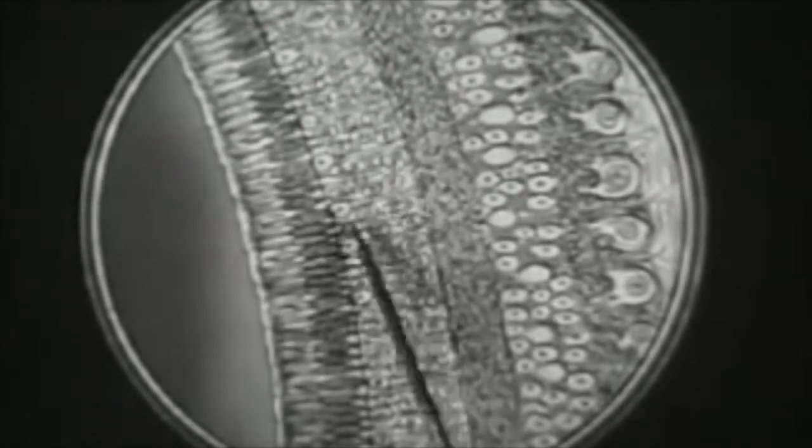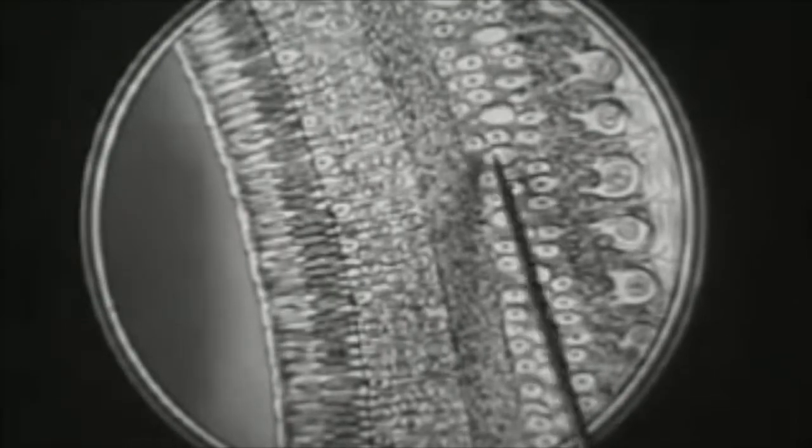Magnified many hundred times, the retina is seen to consist of this complicated arrangement of rods and cones which convert light waves into nerve impulses in some manner which even the science of today cannot fully explain.